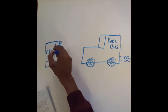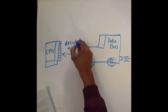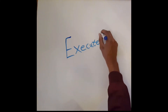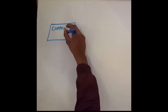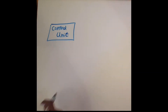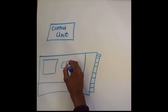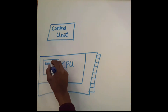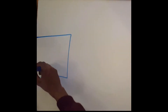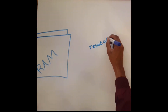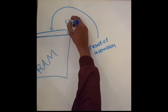Then, the CPU has to decode the instruction in order to understand and complete the request correctly. Once this is done, the instruction is executed. The control unit passes the decoded instruction to the relevant units of the CPU so that they can execute the request. The result of this instruction is then saved to the main memory for quicker access in future.